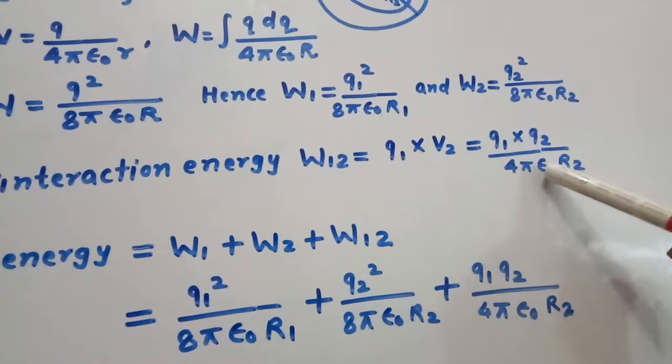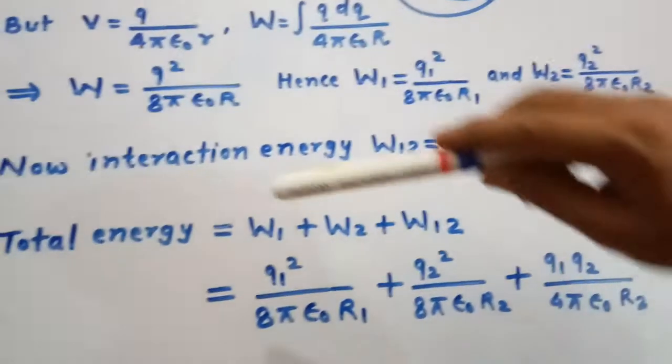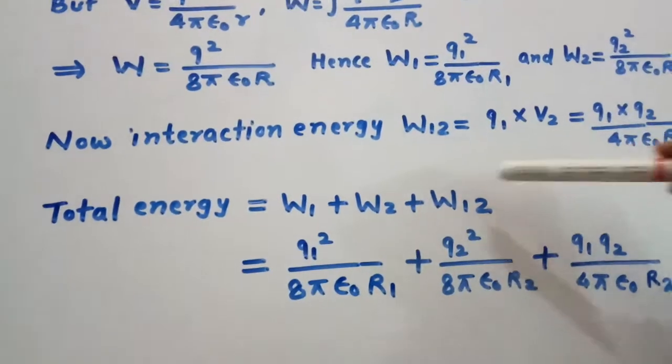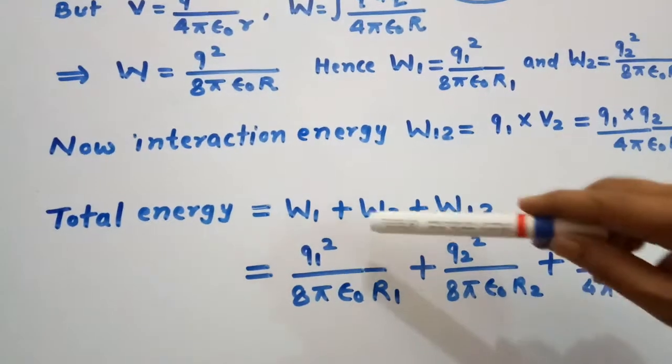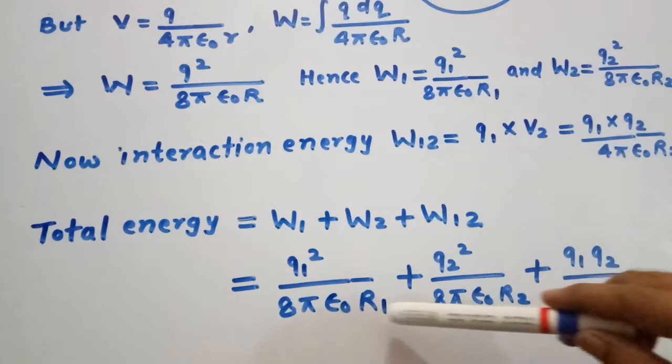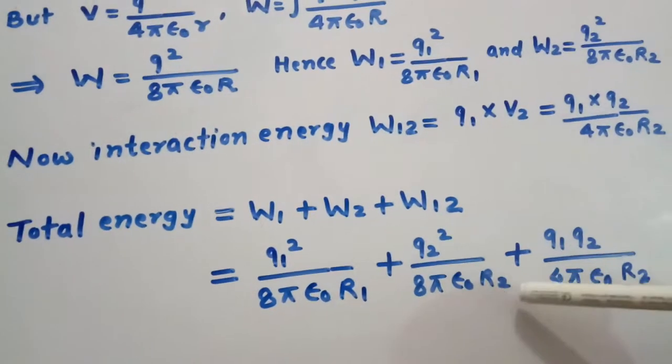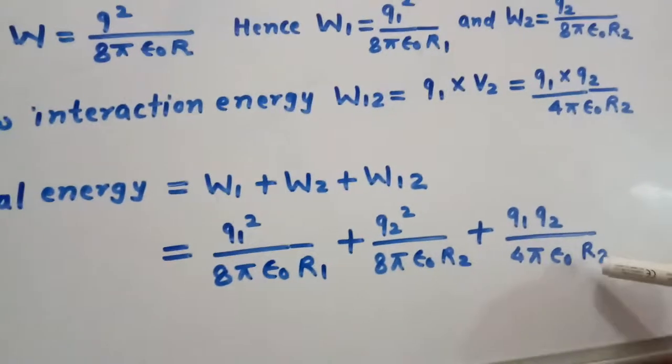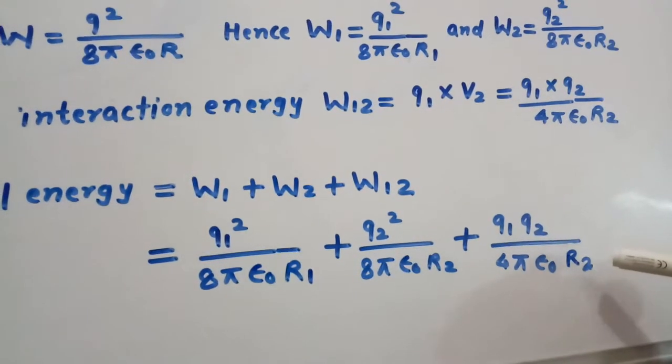And the total energy is w1 plus w2 plus w12, which equals: q1 squared divided by 8π epsilon naught r1, plus q2 squared divided by 8π epsilon naught r2, plus q1 q2 divided by 4π epsilon naught r2. Thank you.